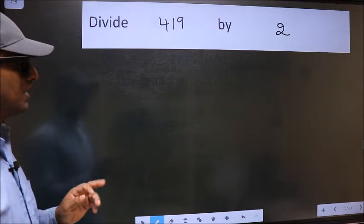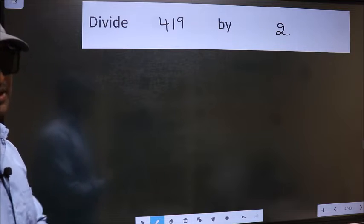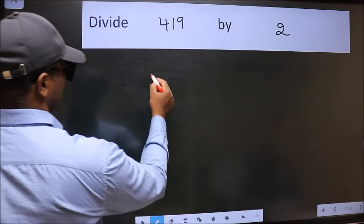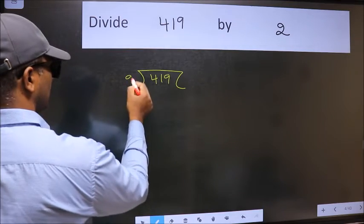Divide 419 by 2. To divide this, we should frame it in this way. 419 and 2 here.